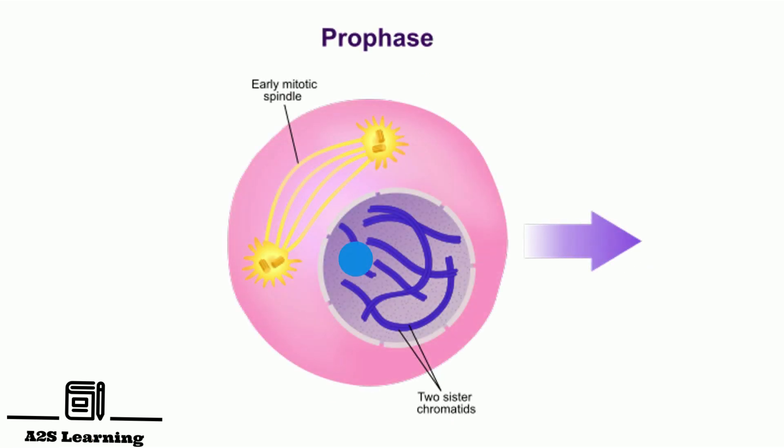Centrosome, which had undergone duplication during interphase, begins to move towards the opposite poles of the cell. Each centrosome radiates out microtubules called asters. The two asters together with spindle fibers forms mitotic apparatus.